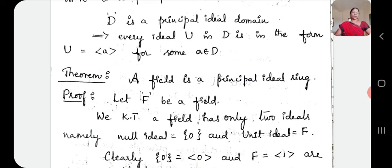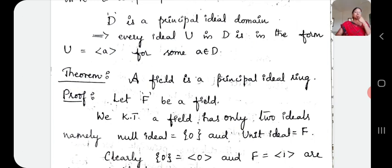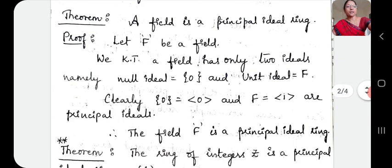So let F be a field. Already we know that a field has only two ideals, namely the null ideal and the unit ideal. A field has no proper ideals. The field has only two ideals — the improper ideal and the trivial ideal. So when we take a field, it has only two ideals: the null ideal, singleton set {0}, and F itself, which is the unit ideal. The null ideal is generated by 0, and F is generated by 1. Both are principal ideals, so we can say that a field is a principal ideal ring.